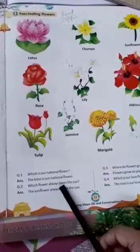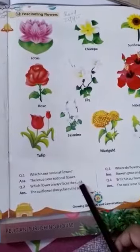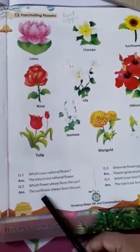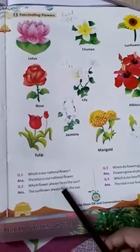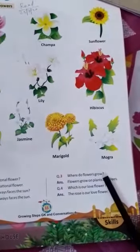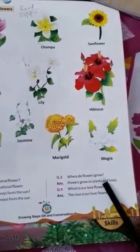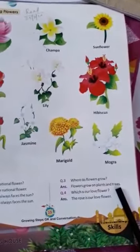Which flower always faces the sun? The sunflower always faces the sun. Where do flowers grow? Flowers grow on plants and trees.